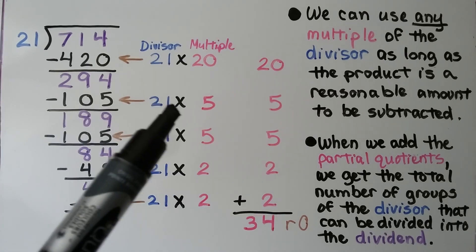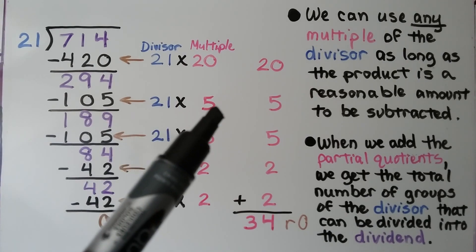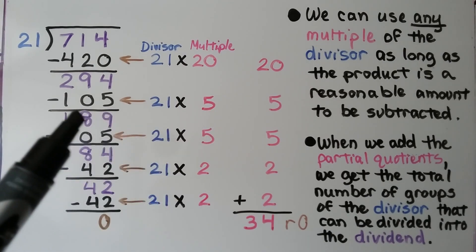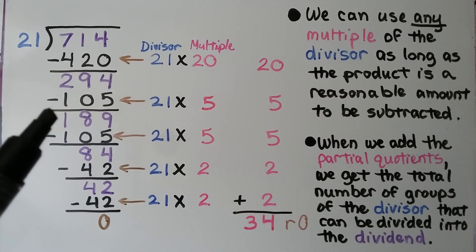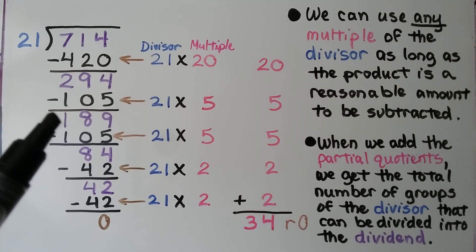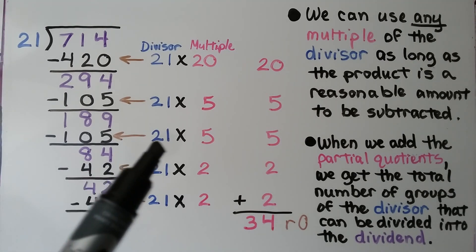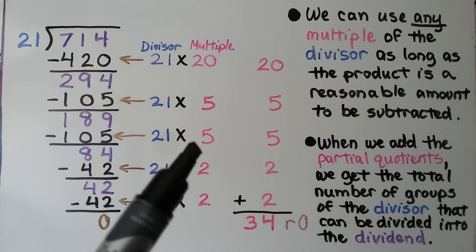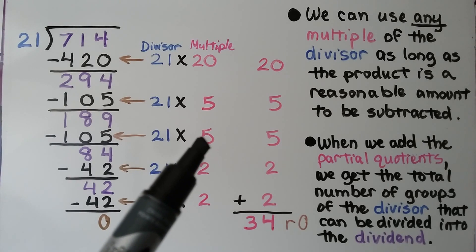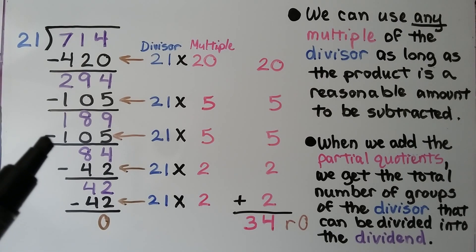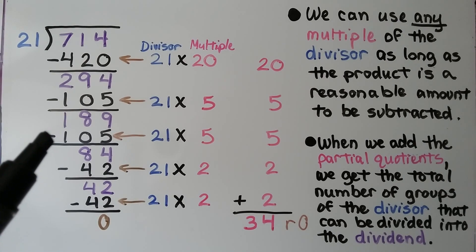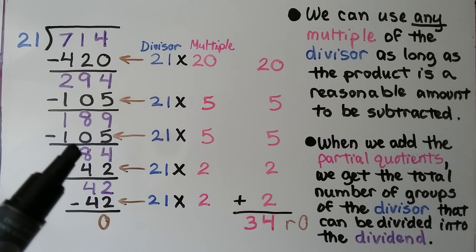Now we use 21 times 5, which is 105. We subtract it and get 189. We use another multiple of 5 and subtract another 105, giving us 84.